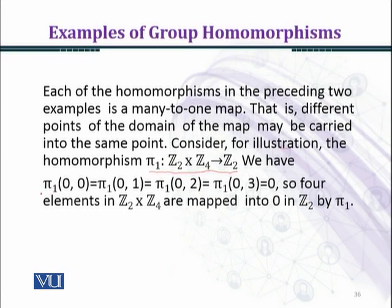We have π₁(0,0) = 0 because we pick just the first coordinate by definition of π₁. Similarly, π₁(0,1) = π₁(0,2) = π₁(0,3) = 0. So four elements in Z₂ × Z₄ are mapped into 0 in Z₂ by π₁. The other four elements (1,0), (1,1), (1,2), and (1,3) are all mapped to 1 under the map π₁.